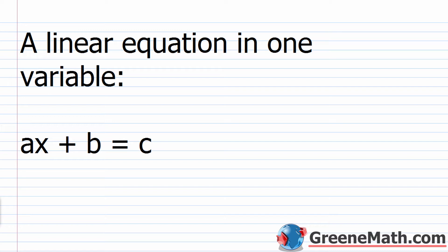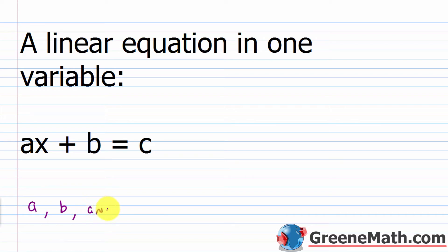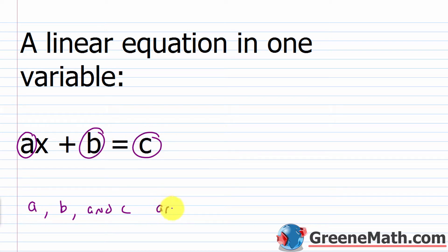You will recall that a linear equation in one variable looks like this: Ax plus B equals C. If you're in a textbook following along, you'll see something like this — this is a generic form. A, B, and C are just representing real numbers.